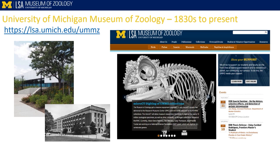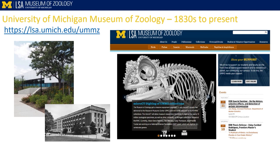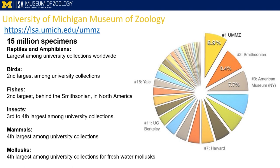This brings me to the UMMZ — the University of Michigan Museum of Zoology, where I work. It's our primary collections and research space, about three miles from here. The University of Michigan has a museum system: down the street is the Natural History Museum, which is our public face, while we are the behind-the-scenes research and specimen-holding facility. We are one of the largest collections on Earth. In terms of herpetological collections, we are the largest university collection globally.